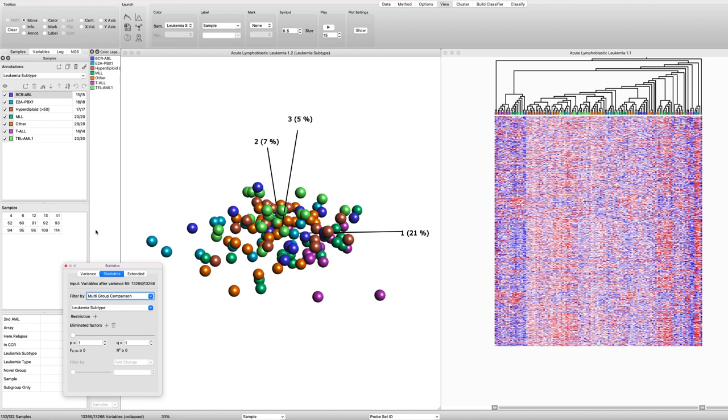Various statistical methods are supported, such as ANOVA, two-way analysis, and regression. We will use the t-test to identify the genes that separate the subgroup E2A PBX1.